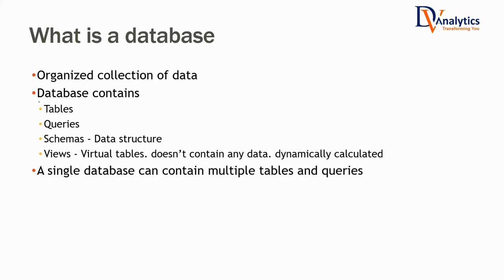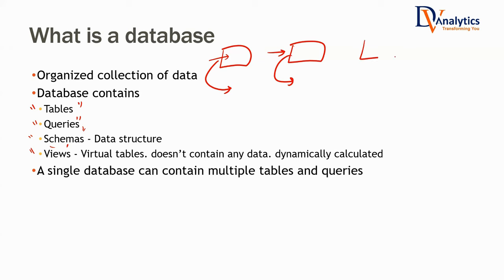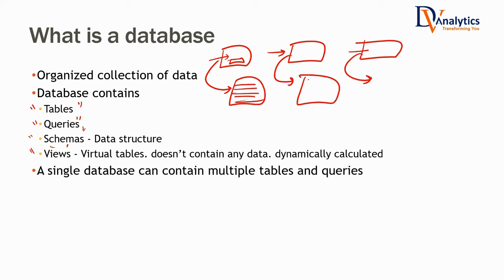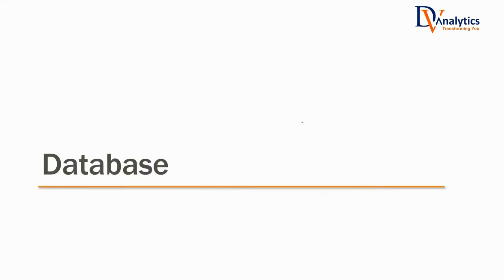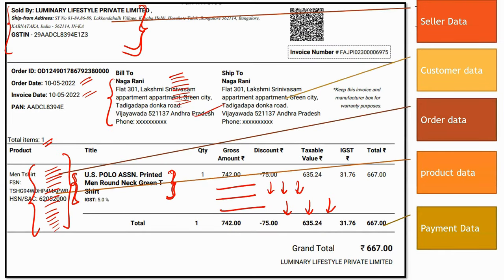You need something slightly bigger or slightly more complex than a single table — that is known as a database. So that is the birth of a database. In simple words, a database is an organized collection of data. A database contains multiple tables, queries, schemas, and views — basically a lot of interconnected information. If a customer is ordering a product, I'll go to the customer table, get the customer information; I'll go to the products table, get the product information; I'll go to the sellers table, get the seller information.